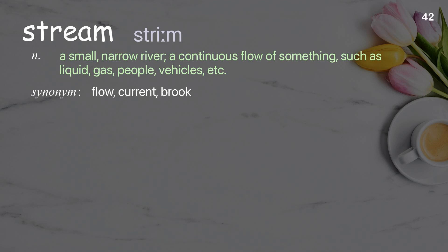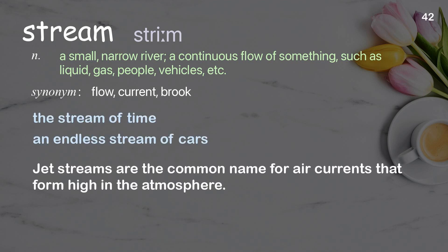Stream. A small, narrow river; a continuous flow of something, such as liquid, gas, people, or vehicles. Examples: the stream of time, an endless stream of cars. Jet streams are the common name for air currents that form high in the atmosphere.